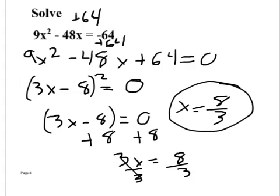Why did I go from (3x - 8)² to just 3x - 8? Because (3x - 8)² is the same as (3x - 8)(3x - 8). I only need to solve for one of those since they're identical factors.